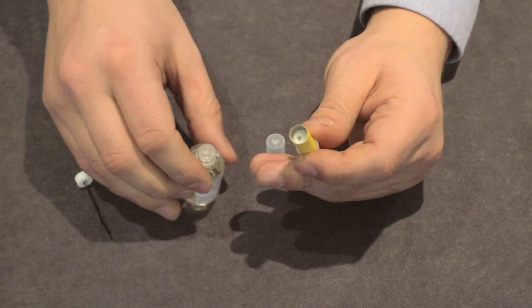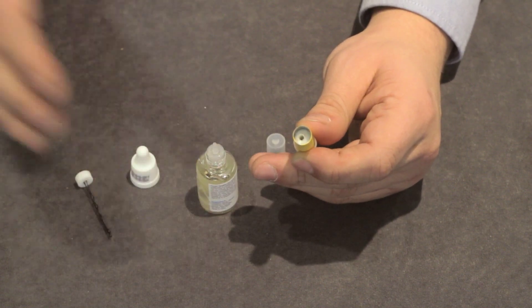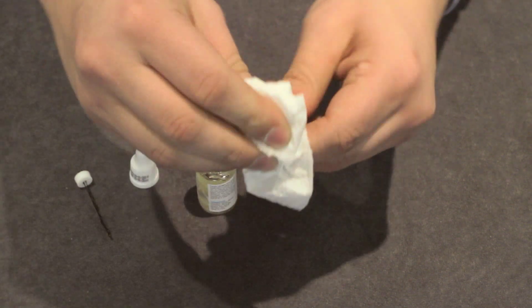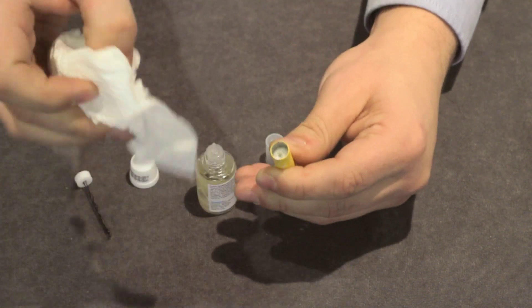When the wick is full, you will see the liquid no longer being drawn into the cotton and will begin to pool at the top. Wipe the cartridge with a paper towel to remove any excess liquid prior to use.